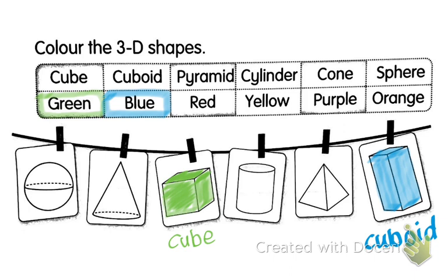Pyramid. We have to color it in red. Which one is pyramid? Pyramid is like a triangle. Okay, this one. This is pyramid.